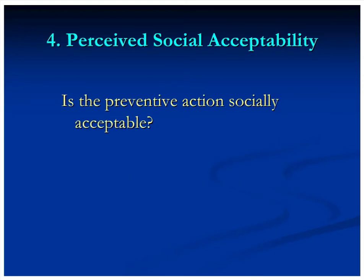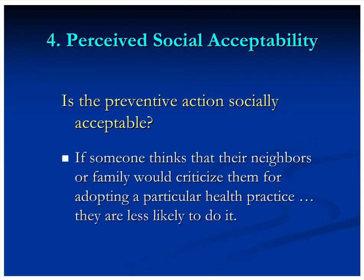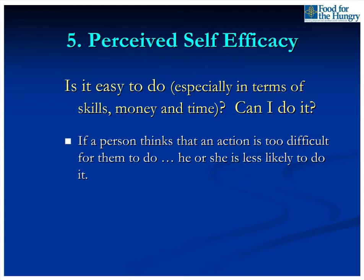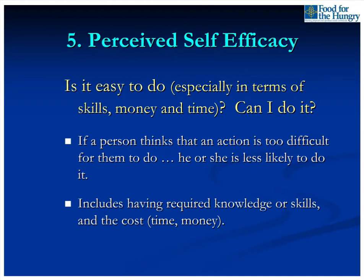Perceived social acceptability: is the preventive action socially acceptable? Do people around me think that I should do this? If someone thinks their neighbors, family, or other people important to them would criticize them for adopting a particular health or agricultural practice, they're a lot less likely to do it. Perceived self-efficacy is another determinant we see over and over as important: is it easy to do, especially in terms of skills, money, and time? If a person thinks an action is too difficult, he or she is less likely to do it.